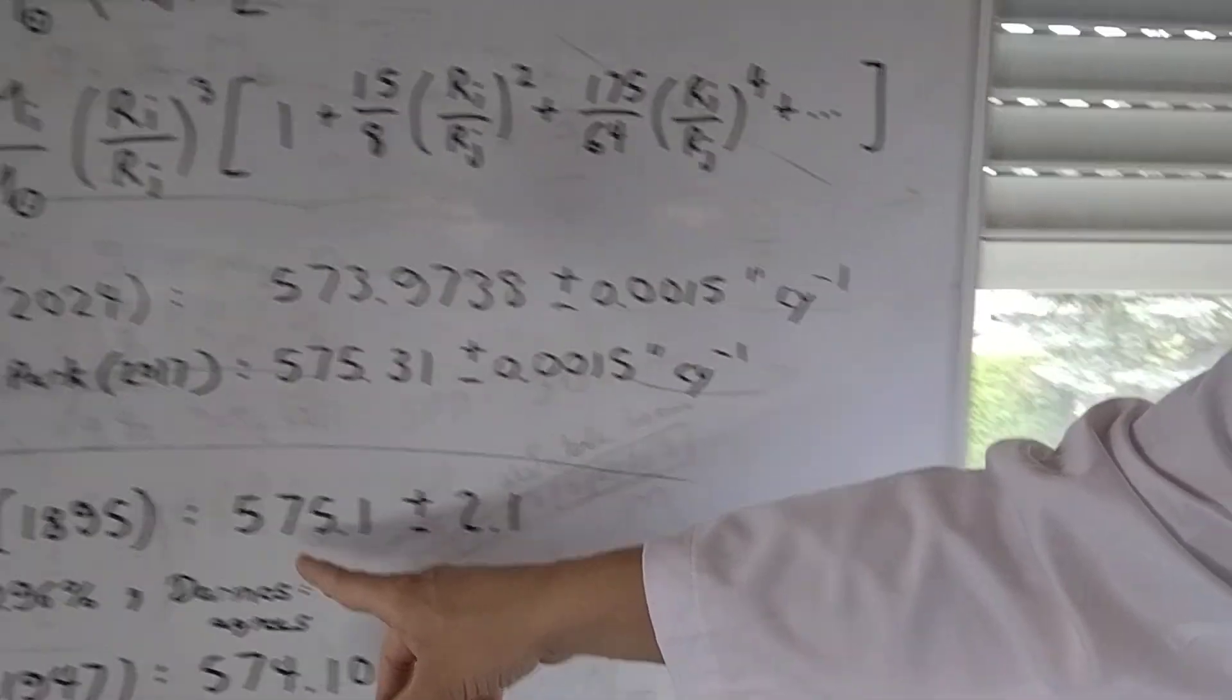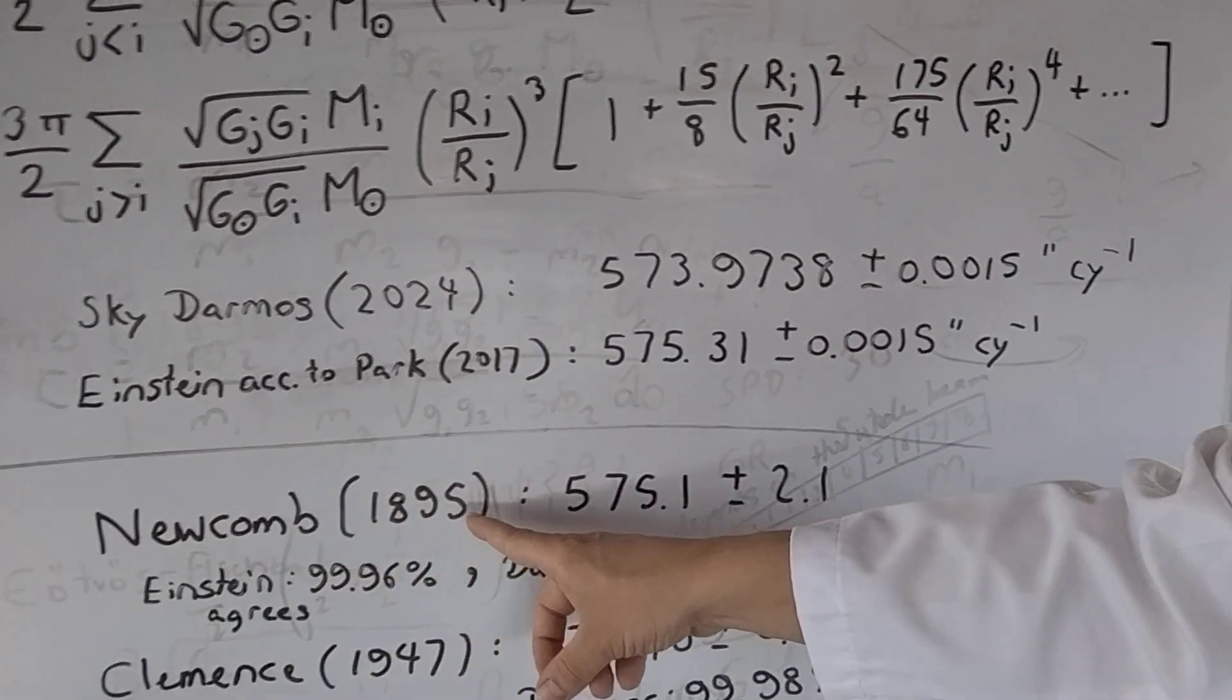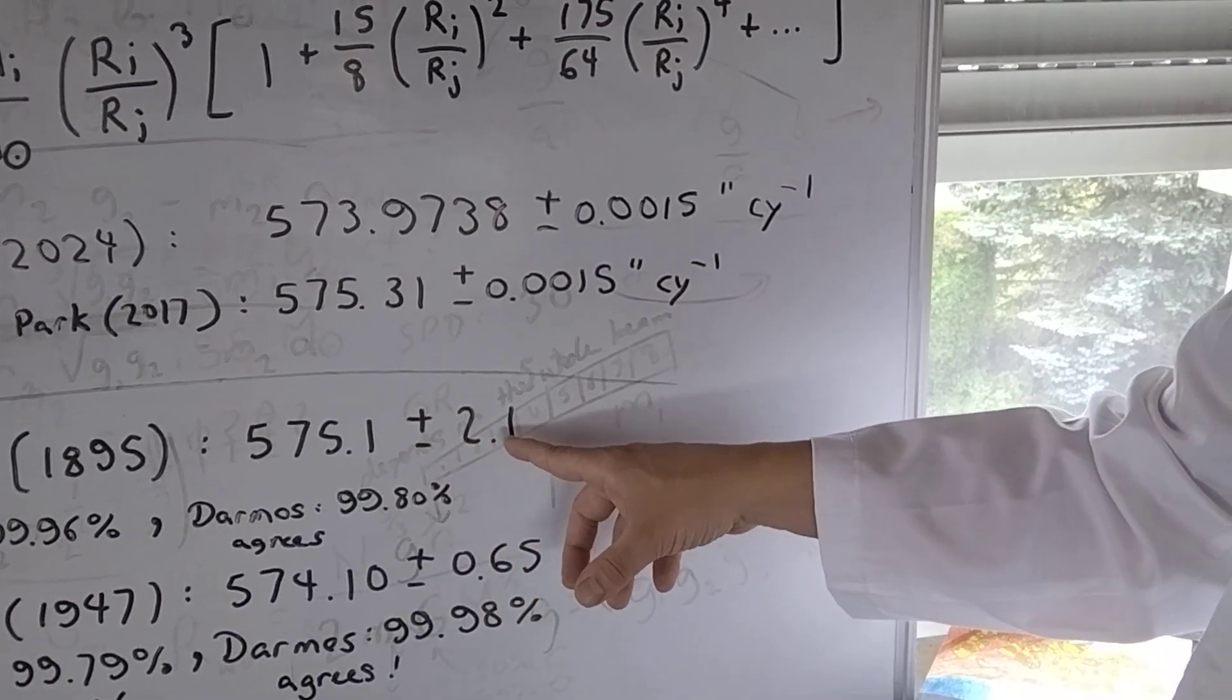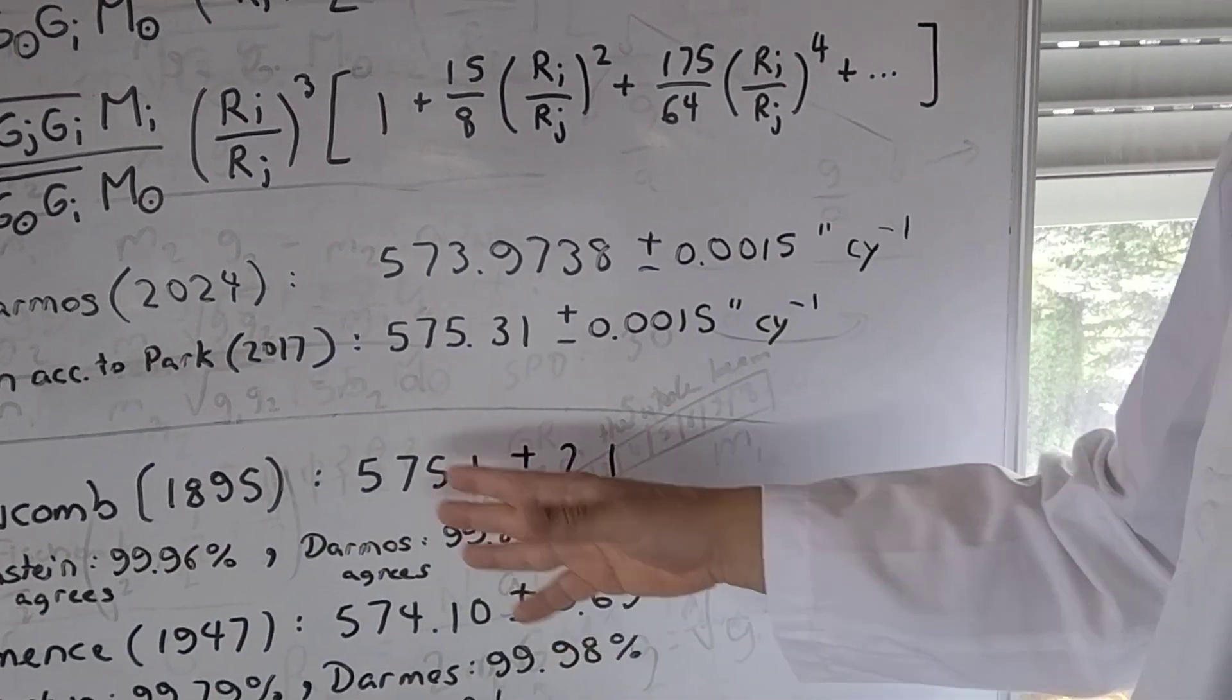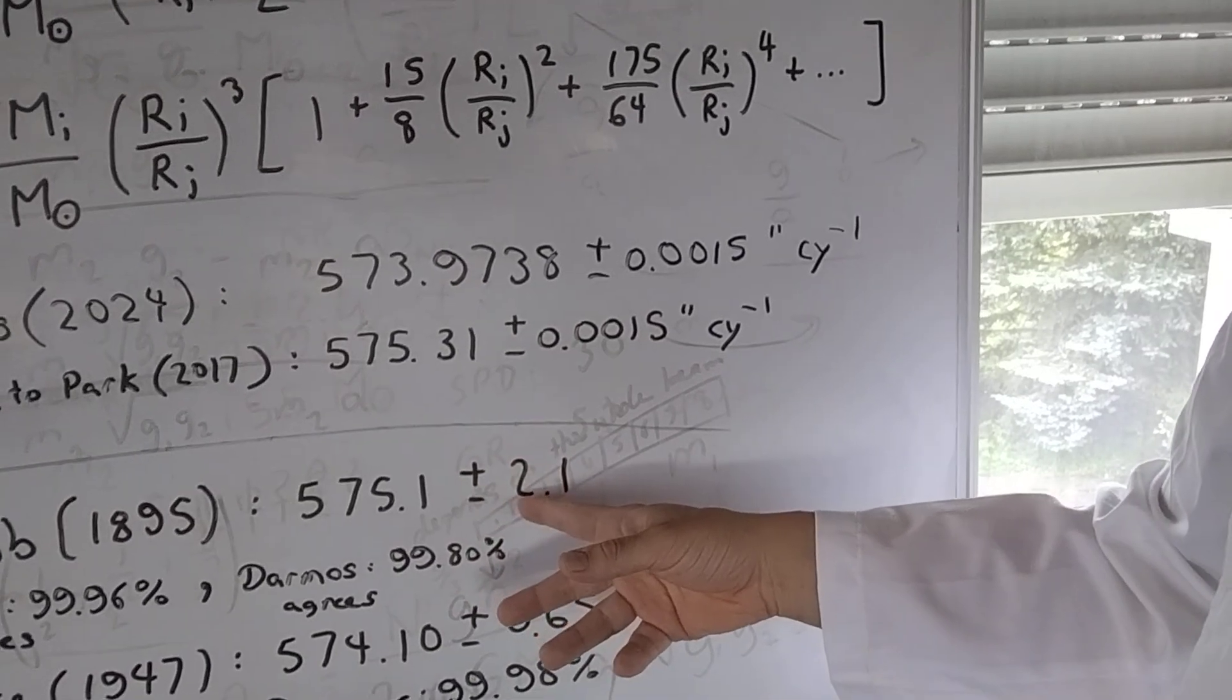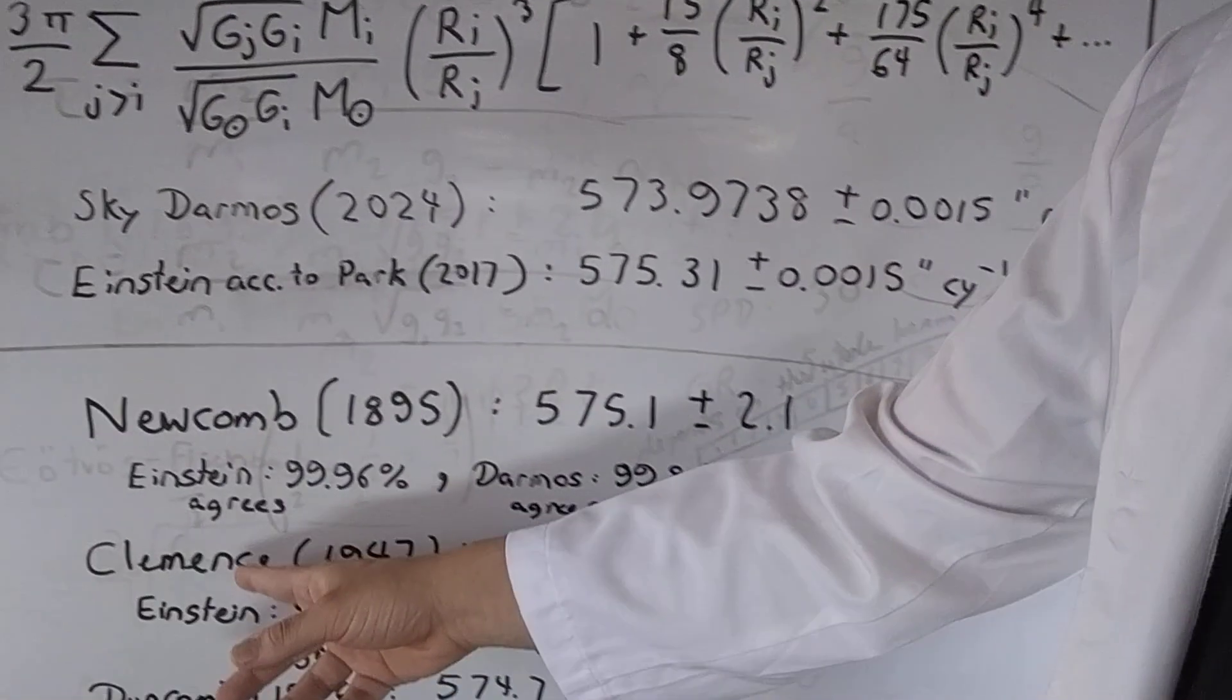This value is pretty close to the very early value by Newcomb, which is not very precise, plus or minus 2.1. So here, both me and Einstein agree, both our predictions agree. But it's not very significant because it's a very high uncertainty here.